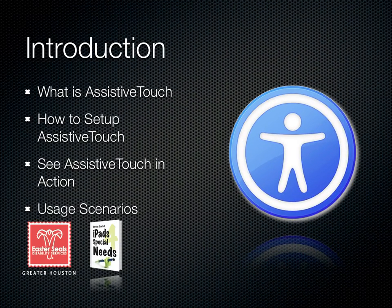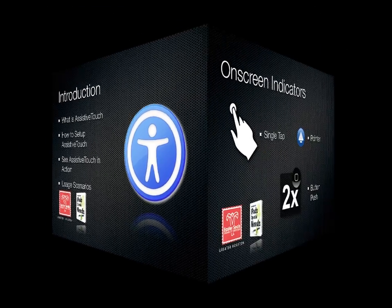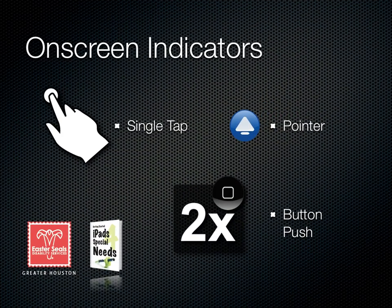In this video, we're going to talk about what Assistive Touch is in terms of an iOS device, how to set up Assistive Touch, see it in action, and go through some usage scenarios. We're going to use three different types of visual indicators. We'll use a hand every time I tap, an icon every time I hit a button on the outside of the device, and arrows to help point out key information on screen.